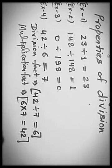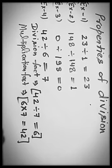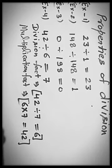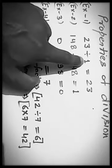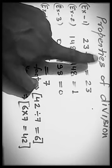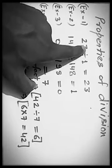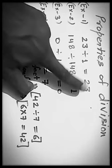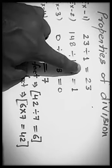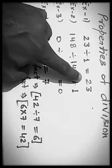Now, properties of division. First property. If a number is divided by 1, the quotient is the number itself. It means, if we divide a number by 1, 23 divided by 1 is equals to 23. 16 divided by 1 equals to 16. 2000 divided by 1 equals to 2000. It means, if we divide a number by 1, then we will get quotient is the number itself. Clear?